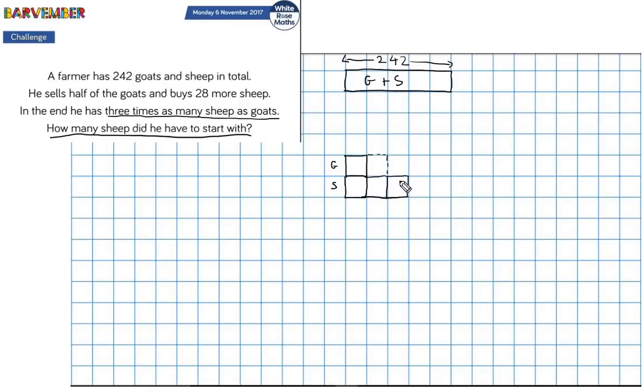Okay. So this is maybe the number of sheep that he had in the beginning. And this is going to represent the 28 sheep that he bought.